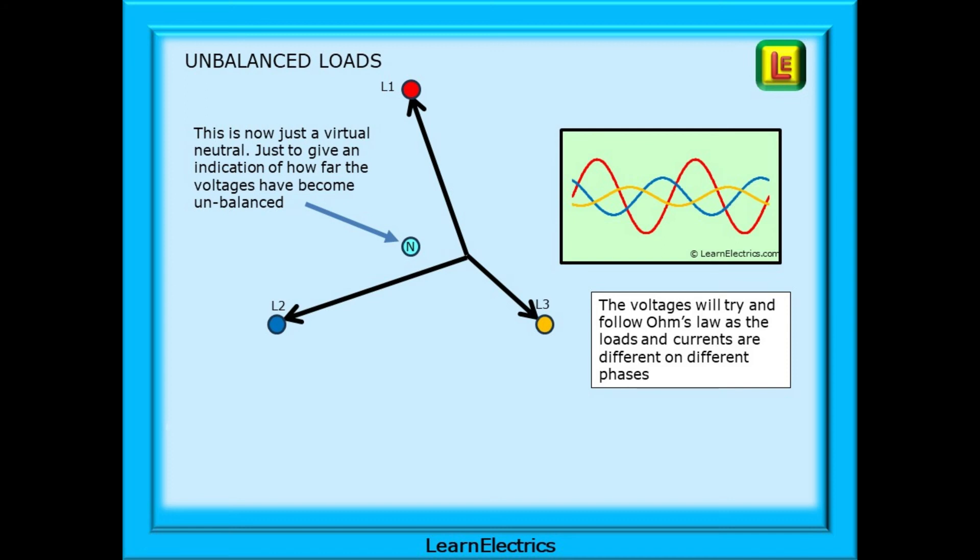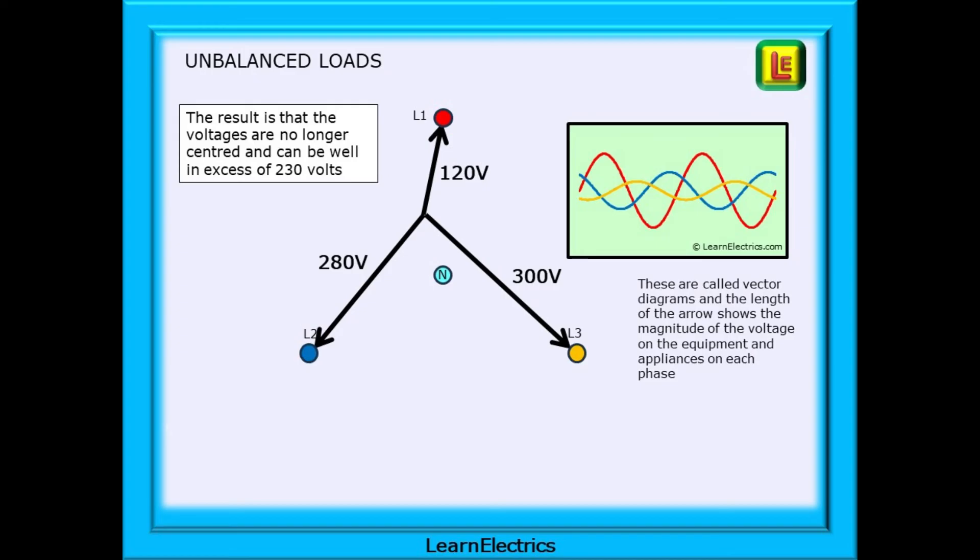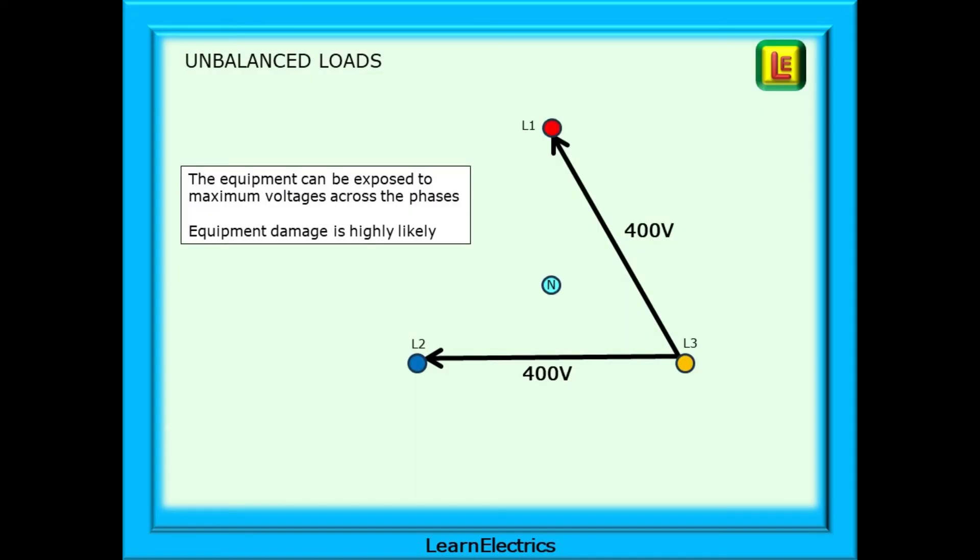An unbalanced load is very different. There will be varying loads on each circuit. As the loads vary and as the current demands vary, the voltages will try and follow Ohm's law to match the loads and currents on different phases. The neutral point has been left on the drawings as a reference for you, to show how the voltages have moved away from a balanced 230 volt state. The result, as you can see, is that the voltages are no longer centered and can be well in excess of 230 volts. These are called vector diagrams and the length of the arrow shows the magnitude of the voltage on the equipment and appliances that are on each phase. The equipment can be exposed to maximum voltages across the phases, as shown here, where the vectors are at their maximum length. At this point, equipment damage is highly likely, almost inevitable, as equipment overheats with the risk of fire.